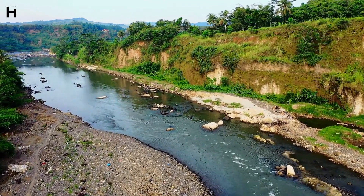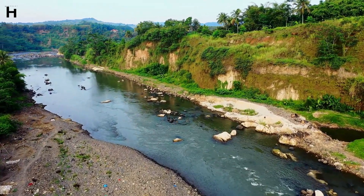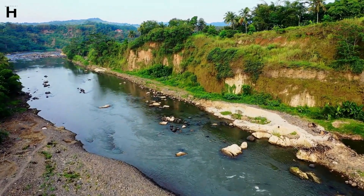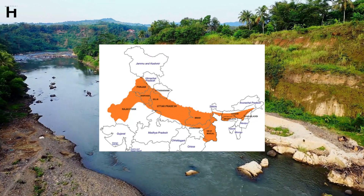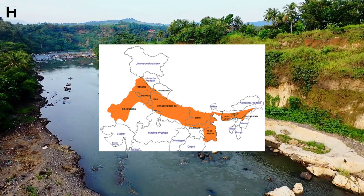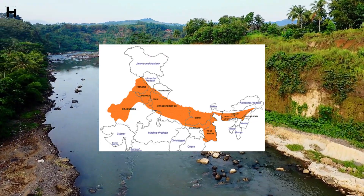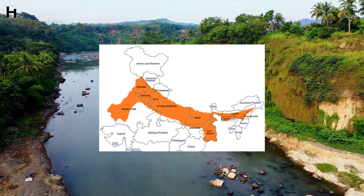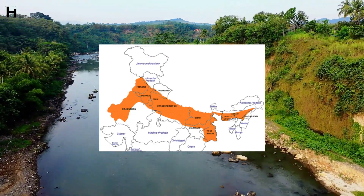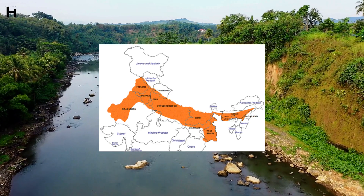The Riverine Plain of India, also known as the Indo-Gangetic Plain, is a fertile plain encompassing an area between the Indus River and the Ganga River.